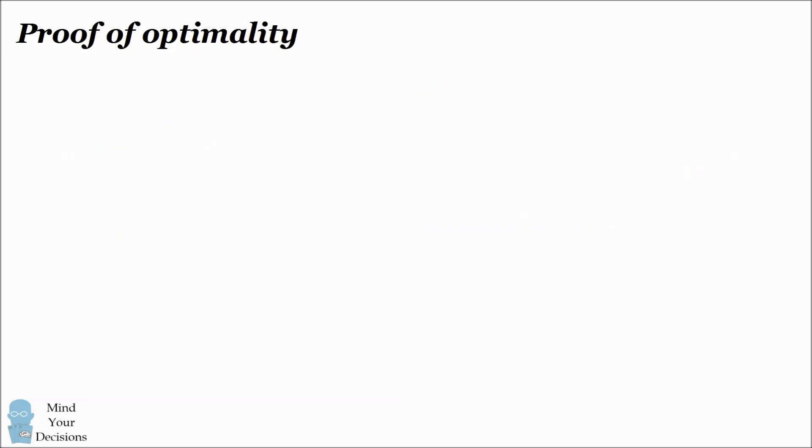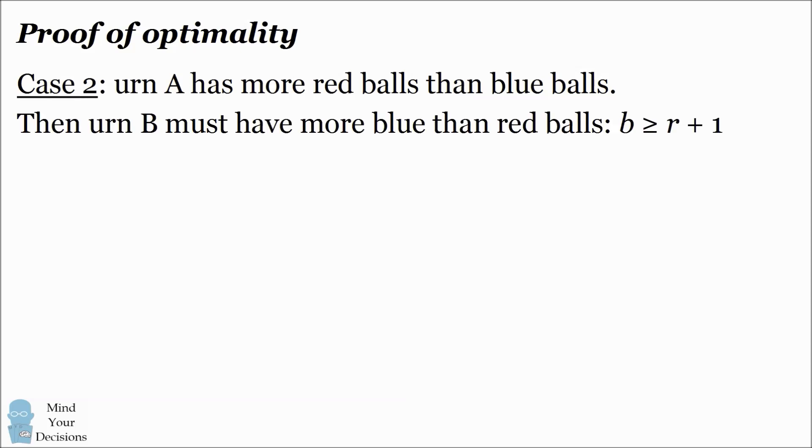So let's consider the other case. We'll imagine that we have to place more red balls than blue balls in one of the urns. Call that urn A. That means the other urn, urn B, must have more blue balls than red balls. b is greater than or equal to r plus 1, where b is the number of blue balls in urn B and r is the number of red balls in urn B.